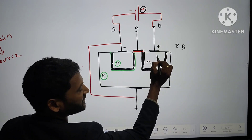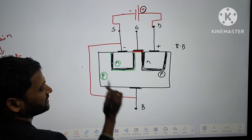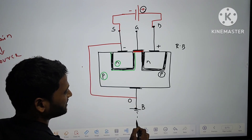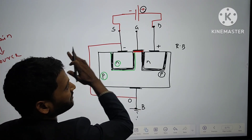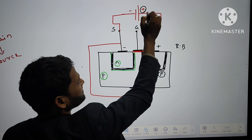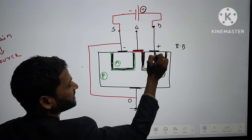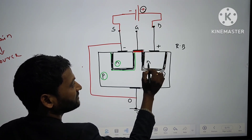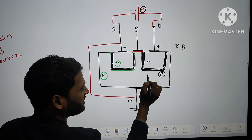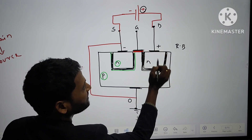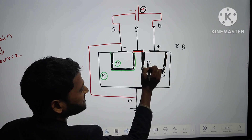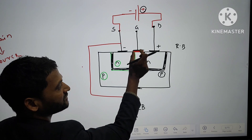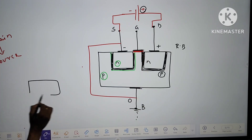If plus is connected to N — considering this N-P junction — it becomes reverse biased. The width of the depletion layer will increase. Similarly, in the second case, if we reverse the polarity, making this side plus and the other minus, then the other junction also becomes reverse biased and that depletion layer width also increases.